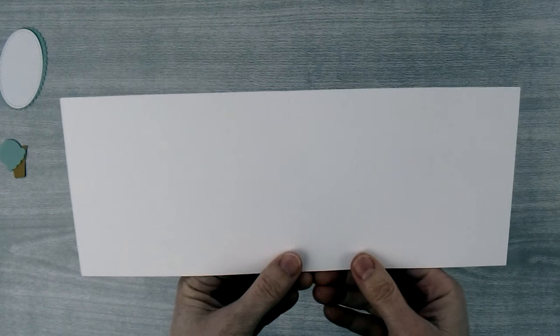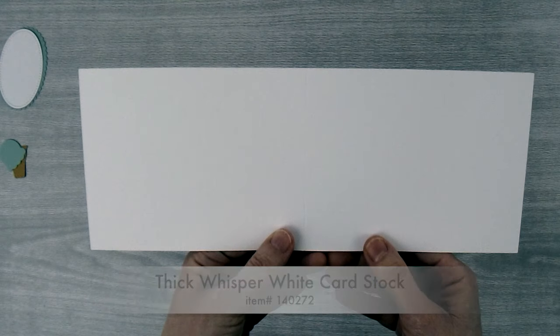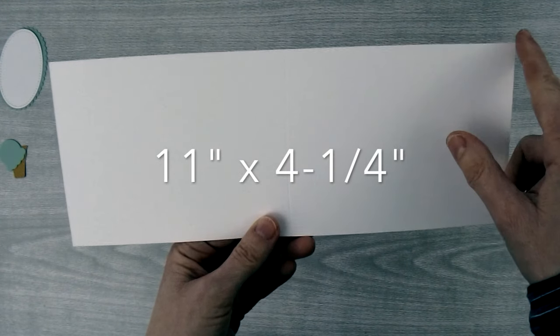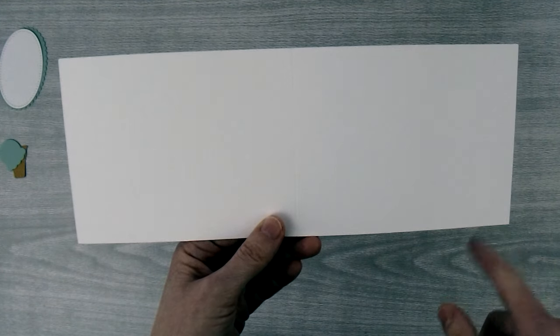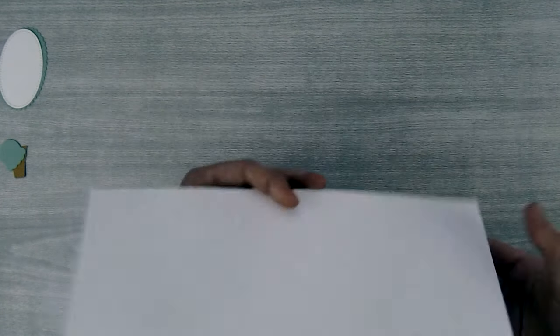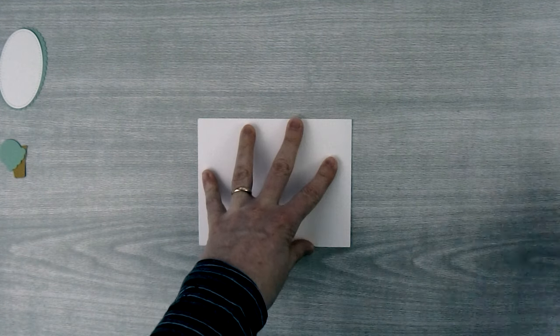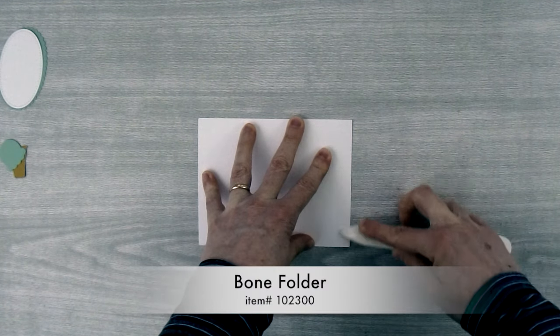Next we're going to need a card base and so I've cut a piece of Thick Whisper White cardstock to 11 inches by four and a quarter inches and then I've scored it in half at the five and a half inch mark. Then I'm going to fold it along the score line and use my bone folder to smooth down that fold.